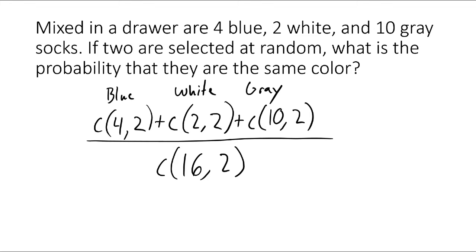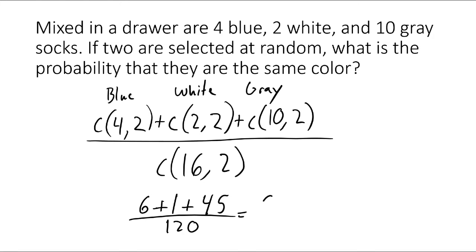The word 'or' does not appear in this problem, but by reading it we know we need two blue socks or two white socks or two gray socks. C(4,2) = 6, C(2,2) = 1, and C(10,2) = 45. Adding those gives us 52 in the numerator. C(16,2) = 120. So our probability is 52 out of 120. We don't have to reduce fractions in this unit, so we can leave the answer like that.